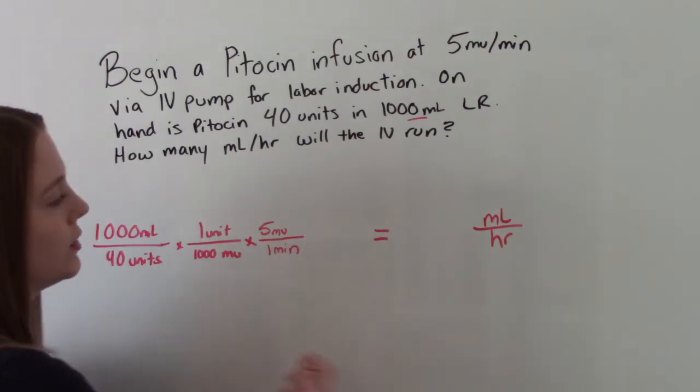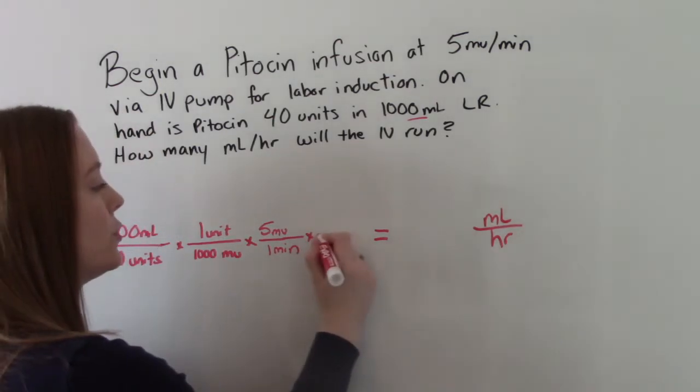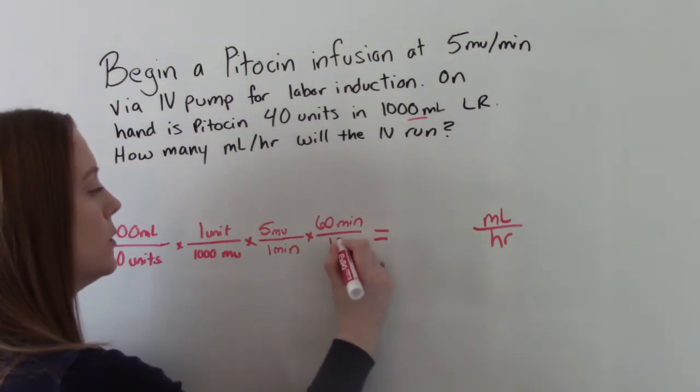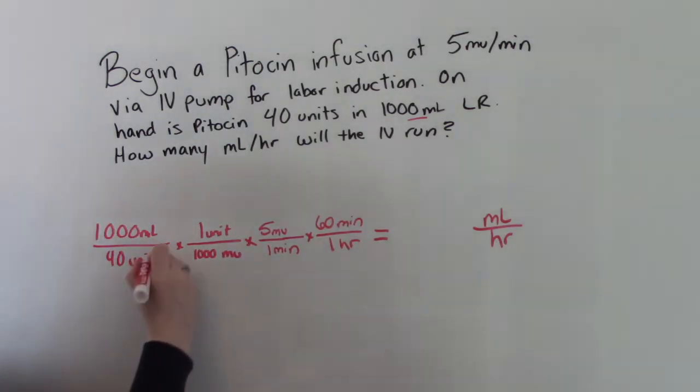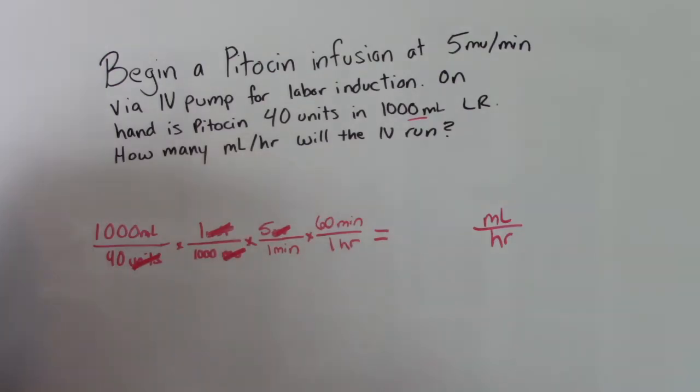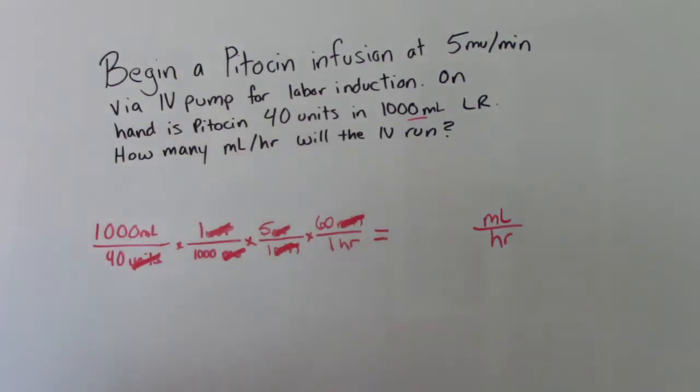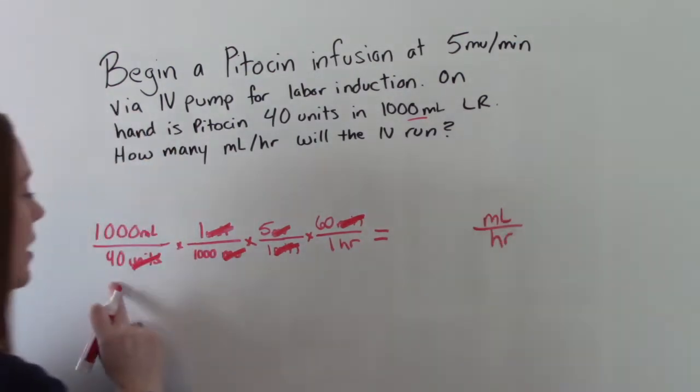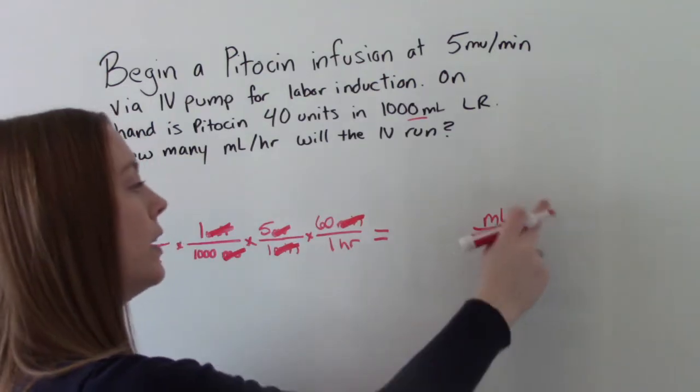And then the last thing we need to do is convert minutes to hours because we're looking for hours. So there's two conversions in this. So 60 minutes is 1 hour. So let's break it down. Units will cancel. Milli units will cancel. Minutes will cancel. That will leave us with mLs as the only thing in our numerator which is what we want in our answer. And then in our denominator hours is the only thing we have. So mLs per hour.